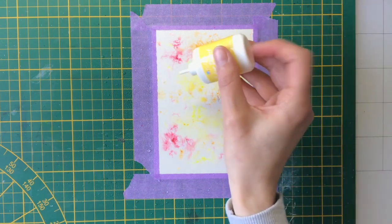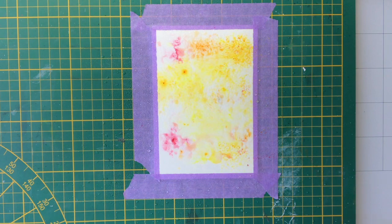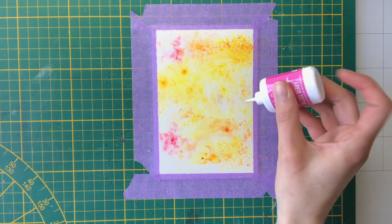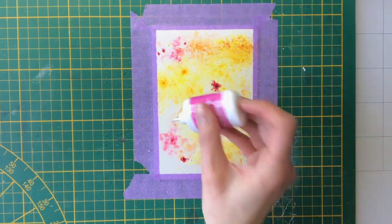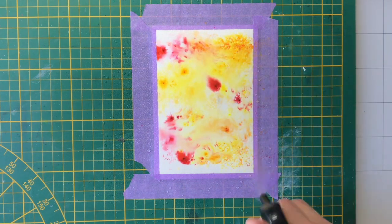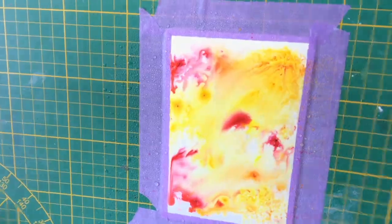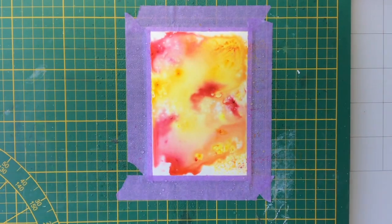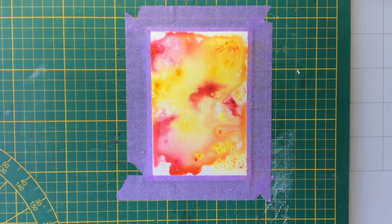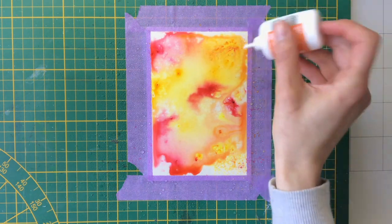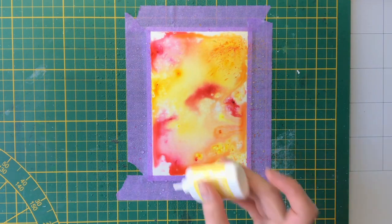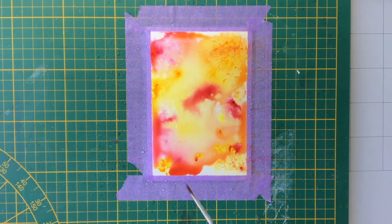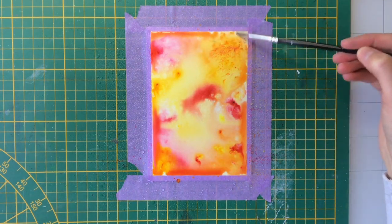To activate the powders I'm spraying them with my distress sprayer from Tim Holtz. Once you've activated the powders with the water, and you feel there's not enough color on the page, you can always add a little bit more by tapping on more powder and activating that with the distress sprayer. Do know that when the watercolor dries, it will look a bit different. I will not use a heat gun for the drying process - if you use a heat gun it will not help with getting a beautiful end result.